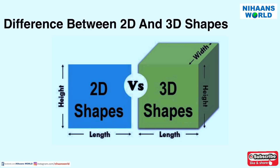Let us learn about the difference between 2D and 3D shapes. 2D shapes are flat and 3D shapes are solid. A 2D shape has 2 dimensions such as width and height, while a 3D shape has 3 dimensions such as width, height, and length.